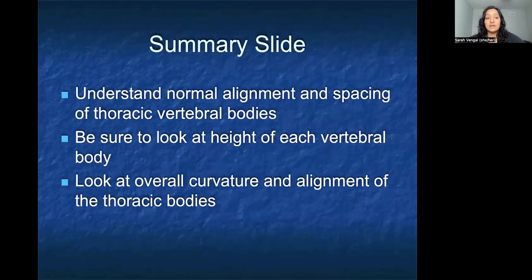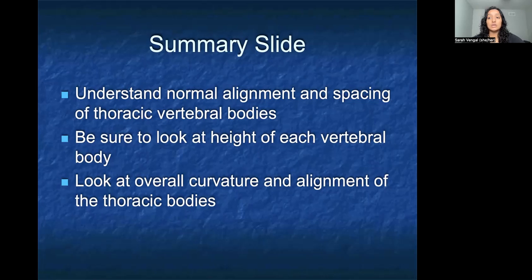In summary, it's really important for the thoracic spine to understand what is normal alignment and normal spacing of those thoracic vertebral bodies. Be sure to look at the height of each vertebral body and whether or not it looks rotated left, right, or up and down. Then look at the overall curvature and alignment of those thoracic bodies so that you don't confuse scoliosis with a potential compression fracture. Thank you for your attention today — I hope you've learned something.